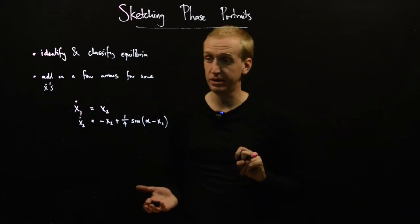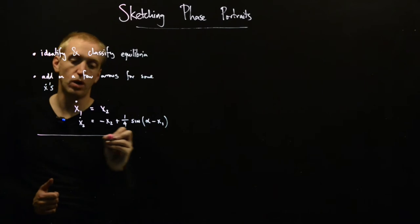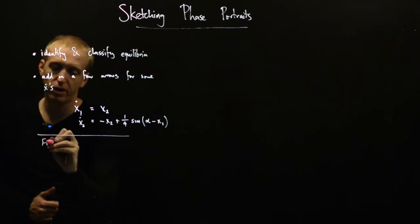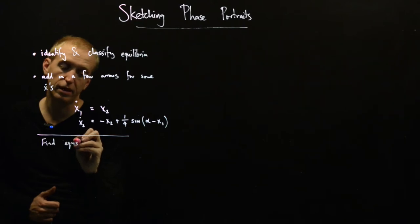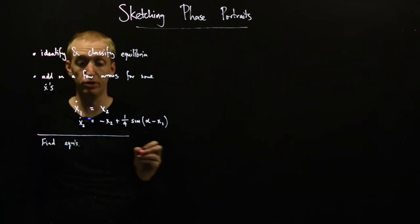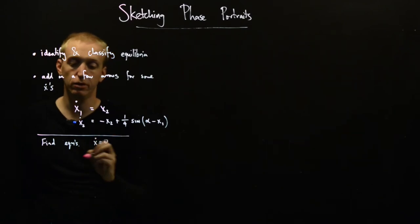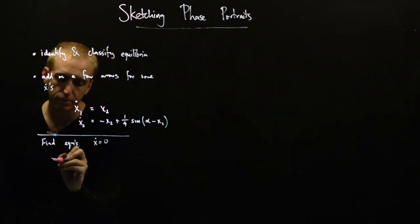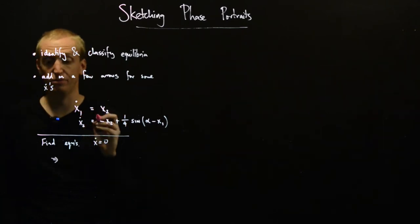So the first thing we need to do is find the equilibrium points. So step one is find equilibriums, and an equilibrium point is a point such that x dot is equal to zero. So we see that this implies, so for x1 dot to be equal to zero, x2 has to be equal to zero.